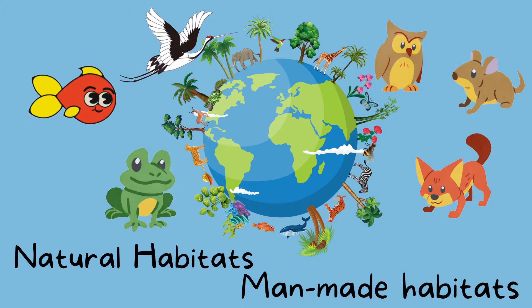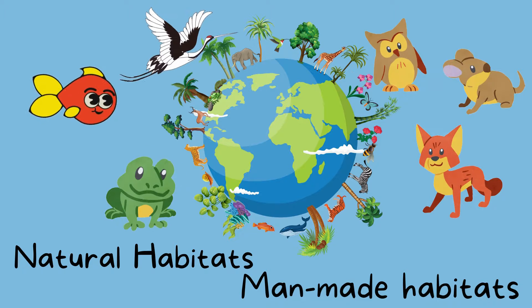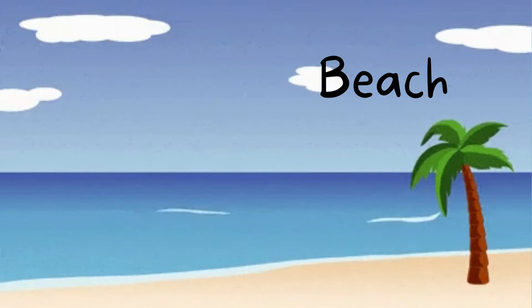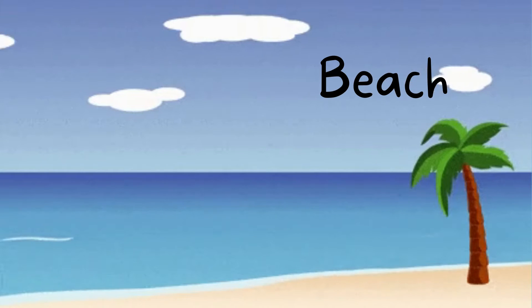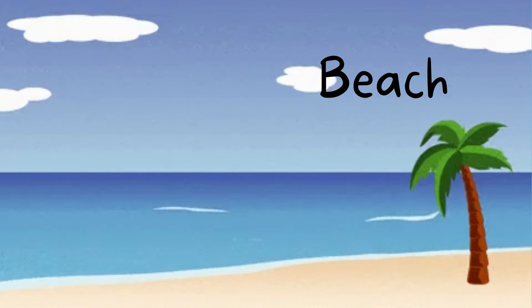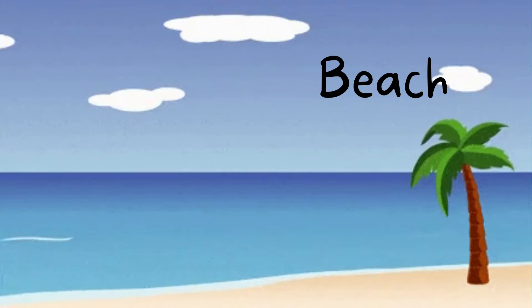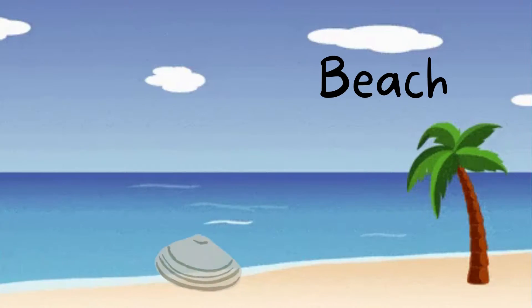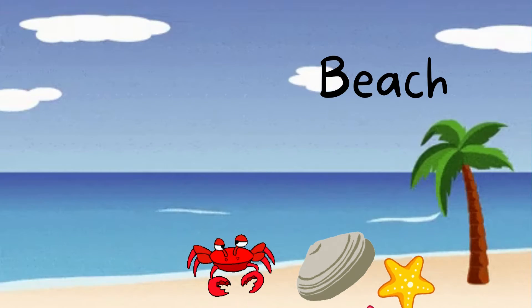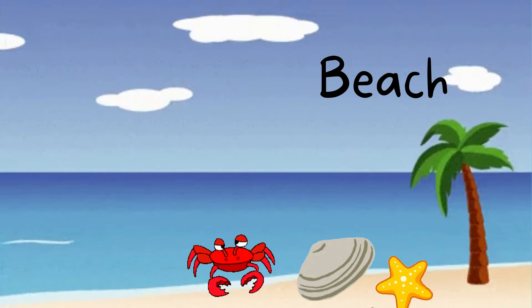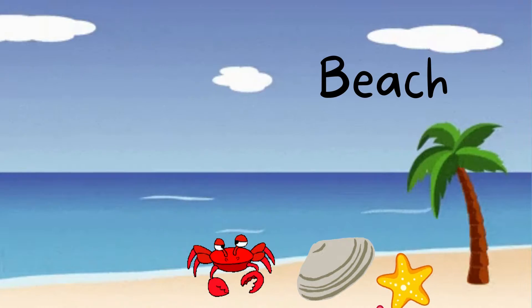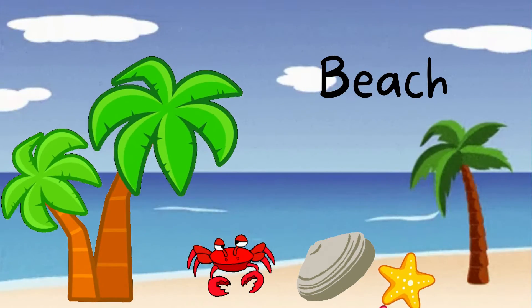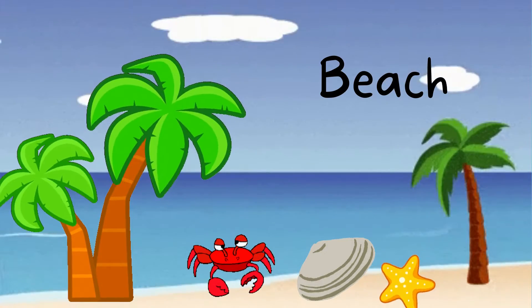Let us start with the natural habitats. The first natural habitat is the beach. Beach is a natural habitat. Some animals and plants live at the beach, like crab, clam, and sea star. There are also some plants like the coconut tree.